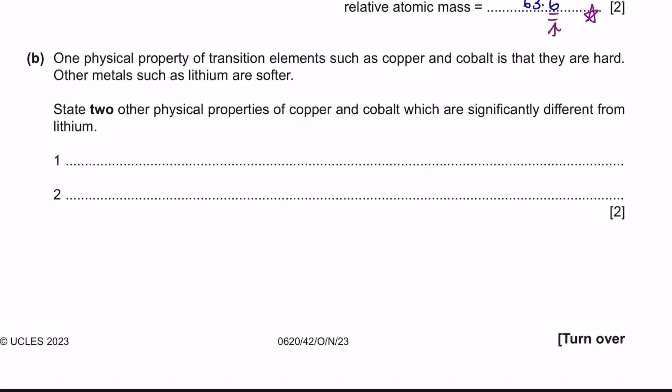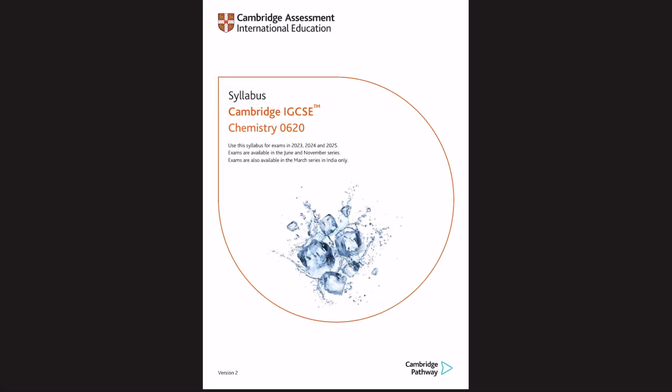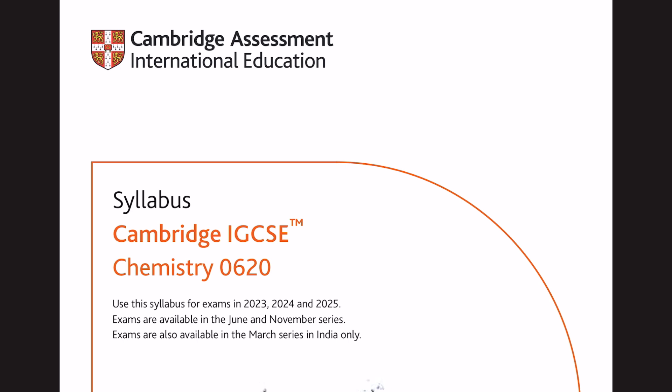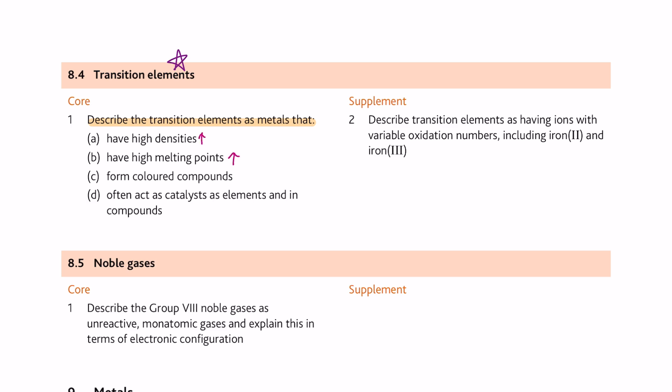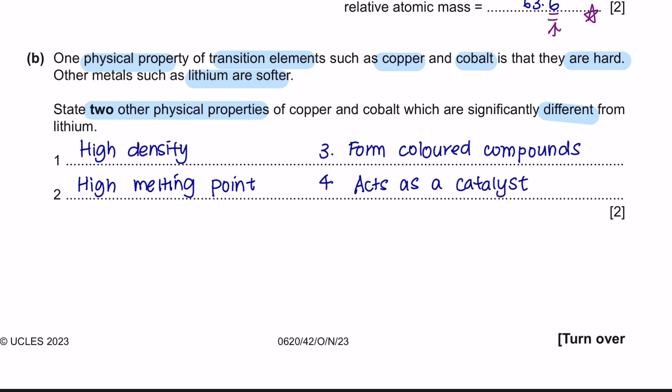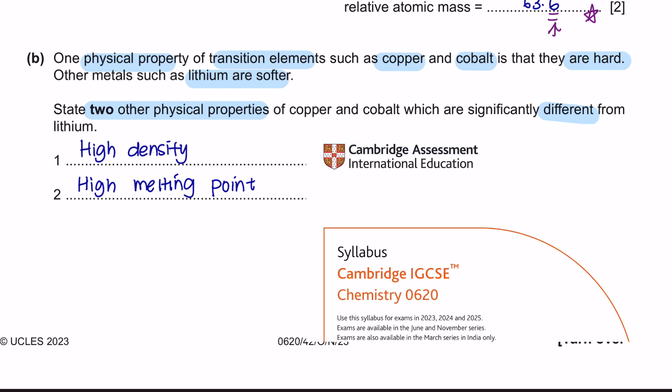Question B. One physical property of transition elements such as copper and cobalt is that they are hard. Other metals such as lithium are softer. State two other physical properties of copper and cobalt which are significantly different from lithium. I've mentioned this in almost all of my videos: look for your core specification of every subject and get it printed out. Your core specification can be really handy because it outlines all the topics and subtopics that you should pay attention to. For instance, in transition element 8.4, it mentions the properties of transition elements as metals: they have high densities, high melting points, they form colored compounds and they act as catalysts. Core specification can be really handy, so make sure you have them printed out for all your subjects.